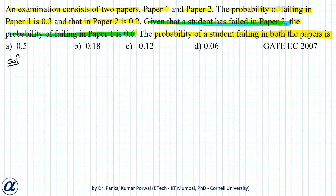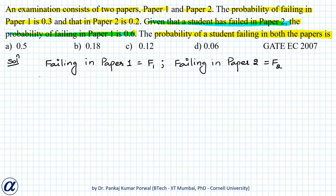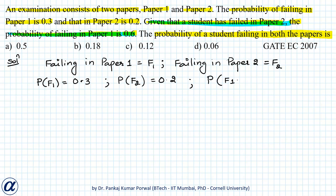Let's define the event of failing in paper 1 as F1, and the event of failing in paper 2 as F2. We are given that probability of F1 is 0.3, probability of F2 is 0.2, and we are also given the probability of F1 given F2 — that is, failing in paper 1 given the student has failed in paper 2 — as 0.6.